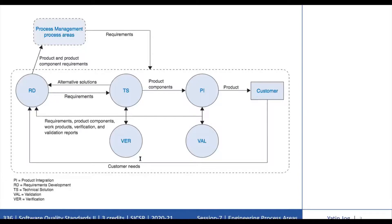Alternative solutions are examined to select the Optimum Design based on Established Criteria. These criteria can be significantly different across products depending on the Product Type, Operational Environment, Performance Requirements, Support Requirements, Cost, Delivery Schedules, and other parameters. The task of selecting the Final Solution makes use of the Specific Practices in the Decision Analysis and Resolution Process Area. The Technical Solution Process Area also relies on the Specific Practices in the Verification Process Area to perform Design Verification and Peer Reviews during design and prior to the Final Build of the Product.